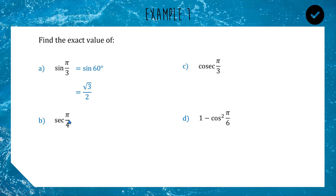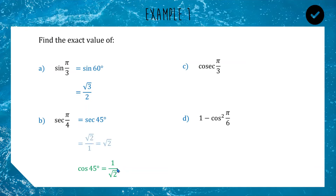For question b, we want sec(π/4). π/4 is a quarter of 180, so it's 45 degrees. Sec — the third letter is c — so sec is cos flipped upside down. Cos 45 is 1/√2, so sec 45 is √2/1, which we write as √2.